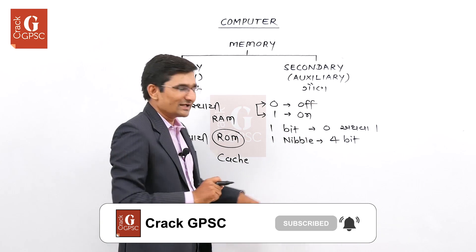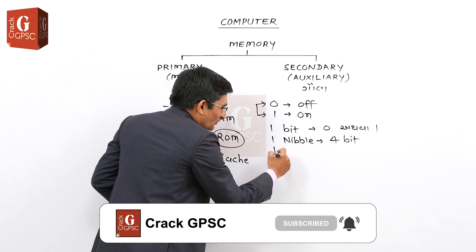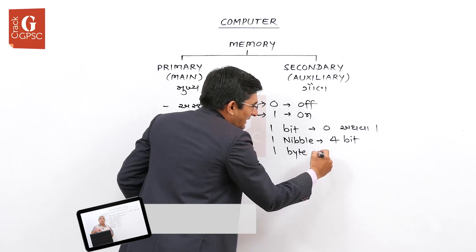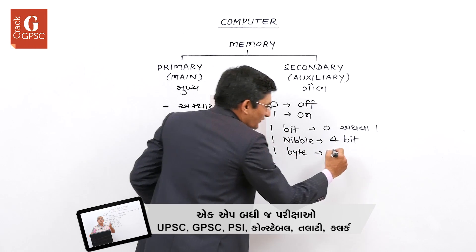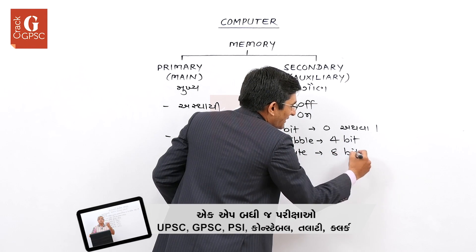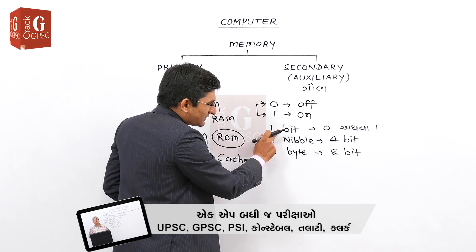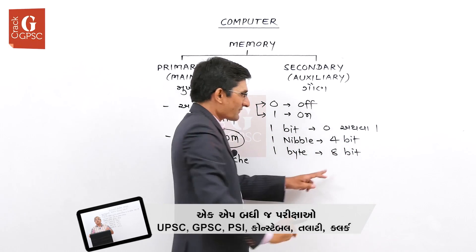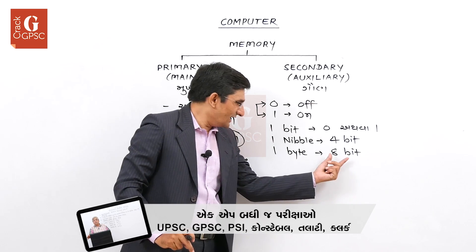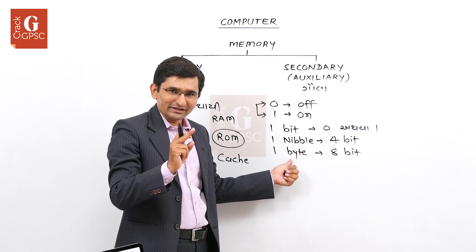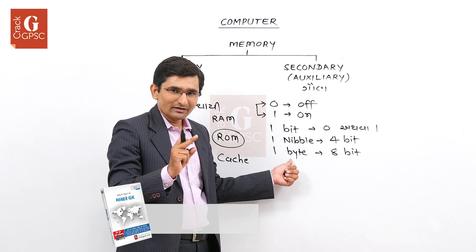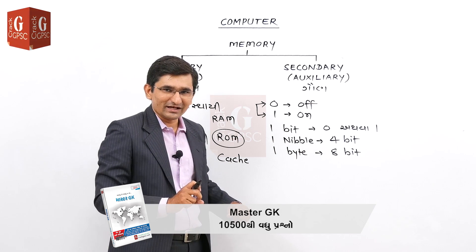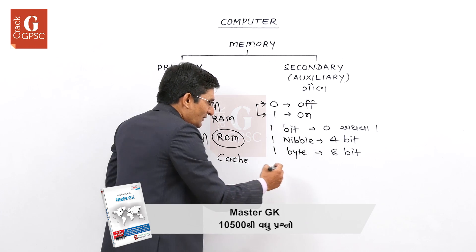હવે એનાથી વધારે — એટલે આ બધ્દે લખેલું છે તો: 1 બાઇટ એટલે શું? 1 બાઇટ એટલે આઠ બિટ. આ આઠ બિટ — 0 અથવા 1 એવા 8 આંકળા ભેગા થાય — એ આઠ બિટ, એ એક બાઇટ.